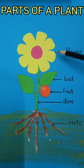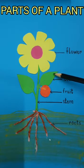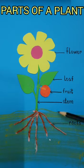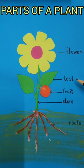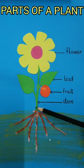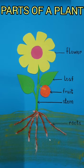So let's repeat: flower, leaf, fruit, stem and roots. Once again: flower, leaf, fruit, stem and roots. Learn them.